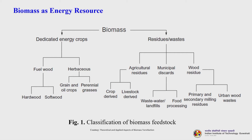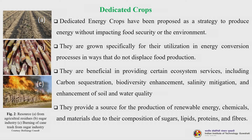Looking at this slide, you can see that biomass is categorized into two groups: dedicated energy crops and residues and wastes. Under dedicated energy crops we have fuel wood — hardwood and softwood — and herbaceous crops including grain and oil crops and perennial grasses. Under residues and waste, we have agricultural residues, municipal discards, wood residues, crop and livestock-derived waste, wastewater, landfill, food processing waste, and urban wood waste.